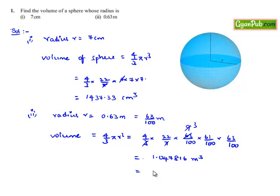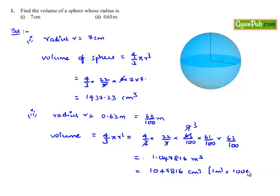This is equal to 10,47,816 centimeter cube, as we know that 1 meter cube is equal to 1 lakh centimeter cube.